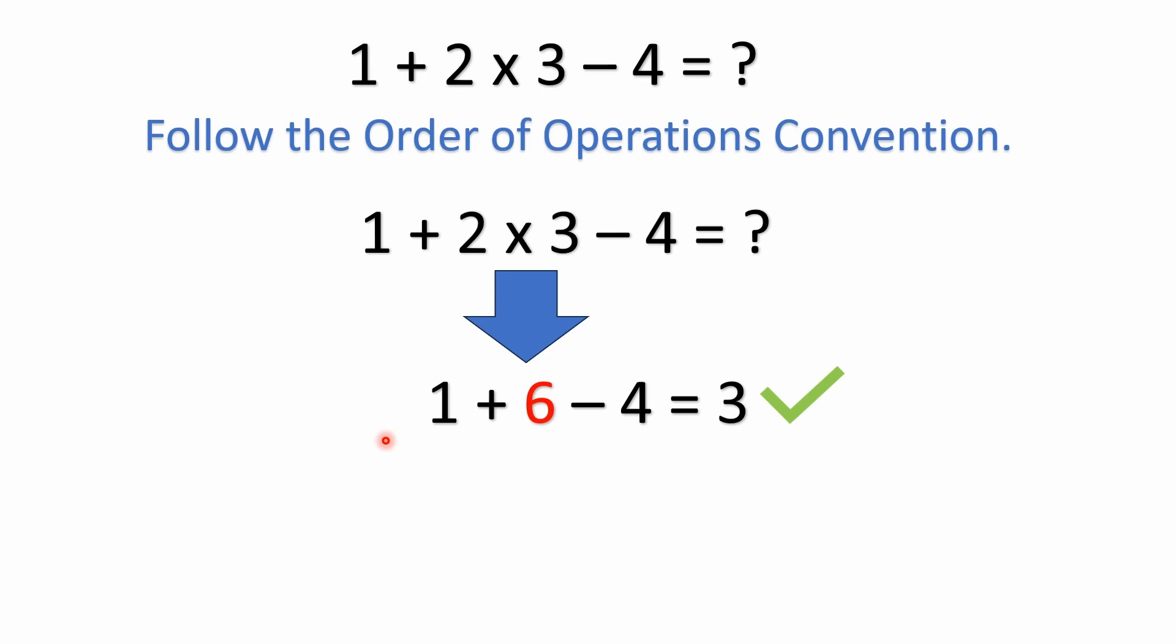So 2 times 3 is 6. And so you'll see here we have 2 times 3 is 6, 1 plus 6 is 7, 7 minus 4 equals 3. And that would be the correct answer.